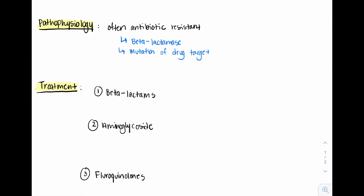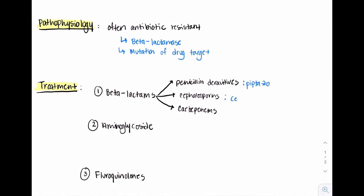In the category of beta-lactams, we have the penicillin derivatives, cephalosporins, and carbapenems. Penicillin derivatives include the well-known antibiotic pip-tazo. Cephalosporins include the third-generation cephalosporin ceftazidime. And carbapenems include meropenem — but importantly not ertapenem, because ertapenem does not have activity against Pseudomonas.